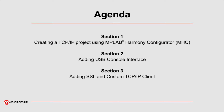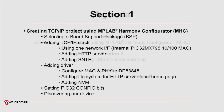In order to achieve this, the video is divided into three sections. In section 1, we will be creating the TCP/IP project using MHC. In section 2, we will be adding the USB console interface, and in the last section we will be adding the SSL library and the TCP/IP custom client applications. So let's start with section 1 by creating the TCP/IP project using MHC.